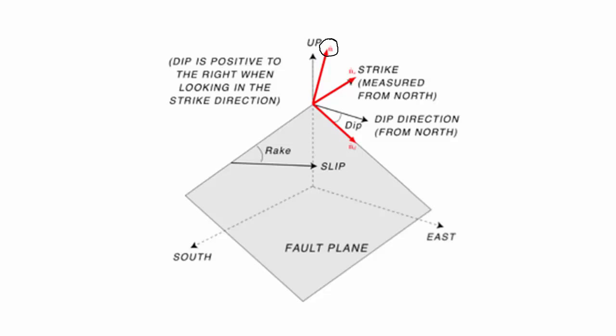This is a unit vector that is normal to the fault plane. This is a unit vector in D — that's in the direction of the dip. And then this is a unit vector in S — that's in the direction of the strike. So this is just a way to define our plane.